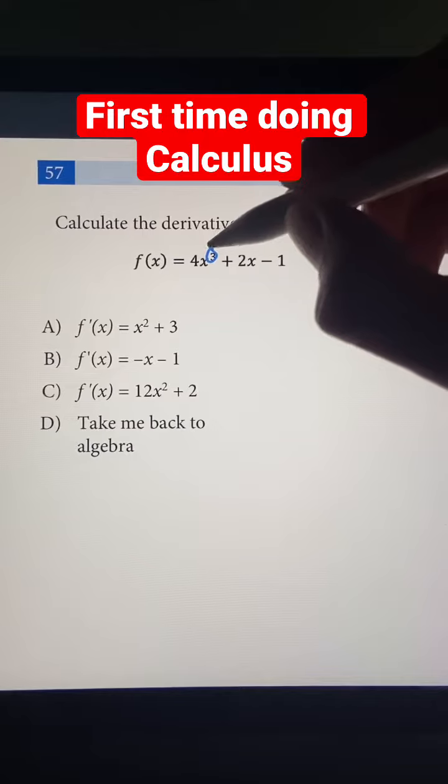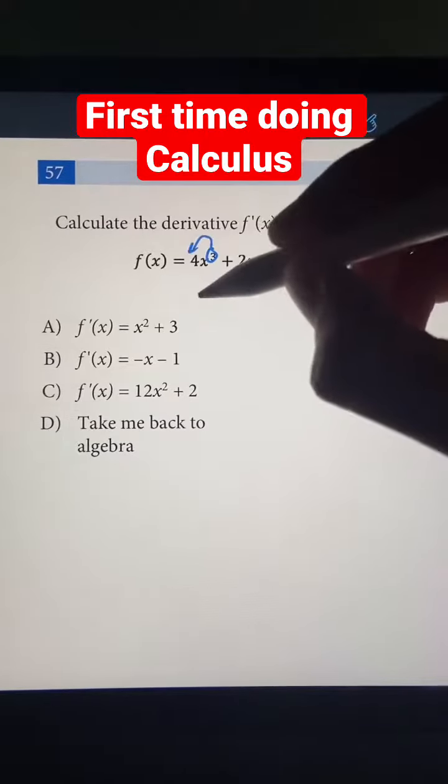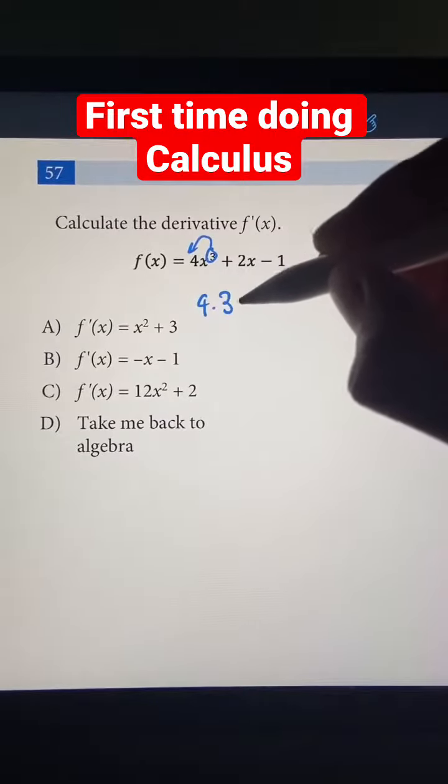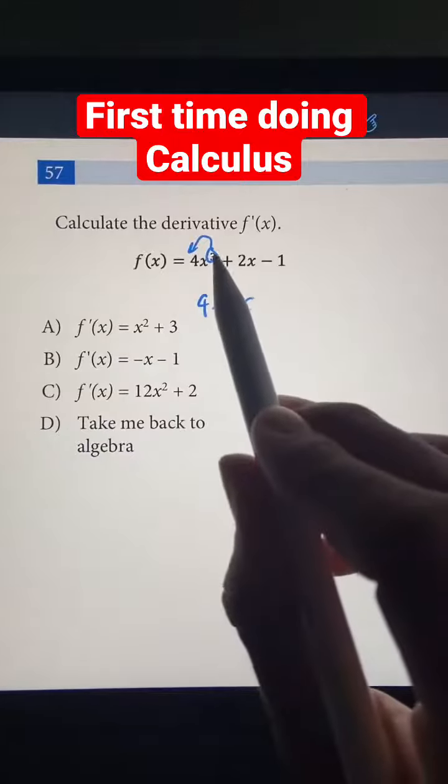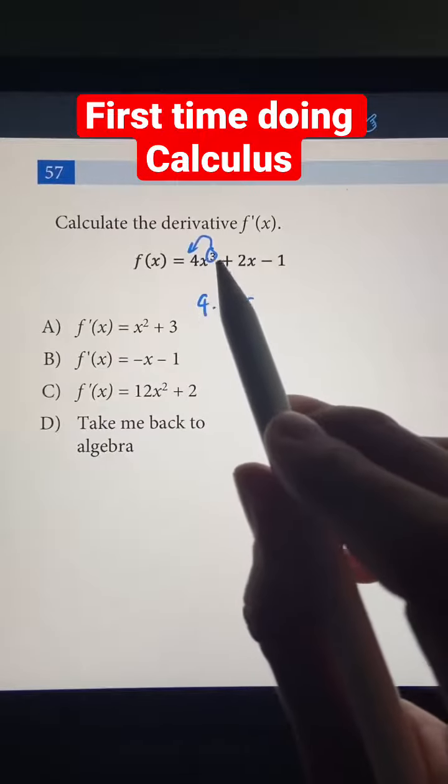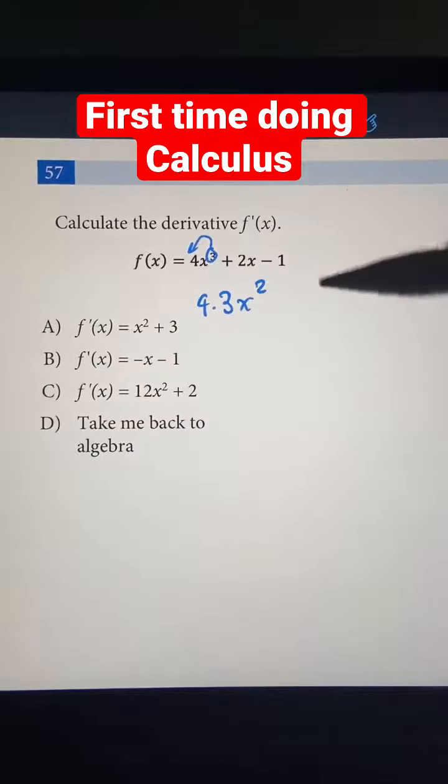All you have to do is grab the exponent and bring it down to the bottom. So now we have 4 times 3, and then we still have an x, but we decrement the exponent by 1. So 3 minus 1 is 2.